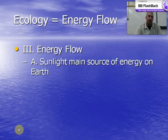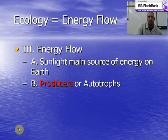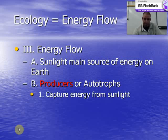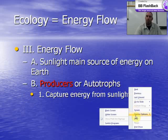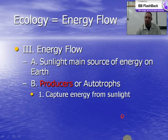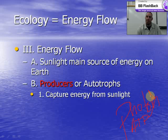Energy flow in an ecosystem is obtained in a producer from photons of sunlight from our Sun — that is the main source of energy for every organism on Earth. Going back to unit 4, the process of photosynthesis allows producers or autotrophic organisms to capture a photon of light, which is eventually converted into ATP energy.